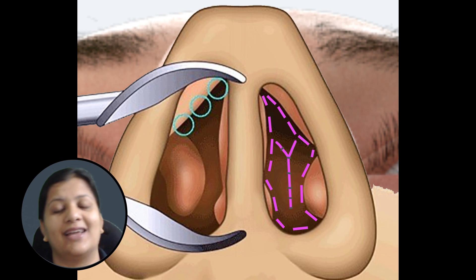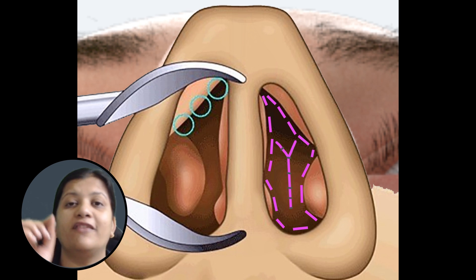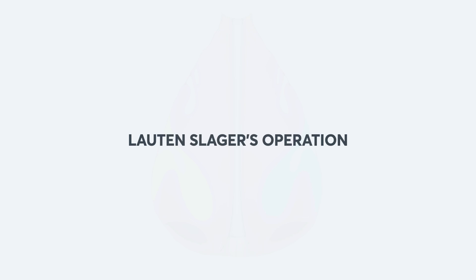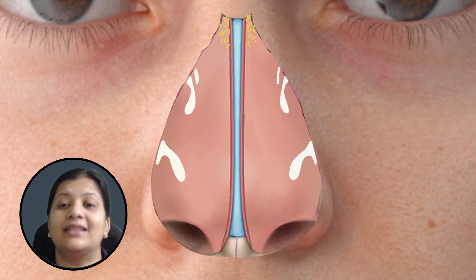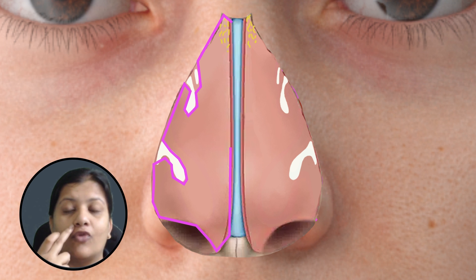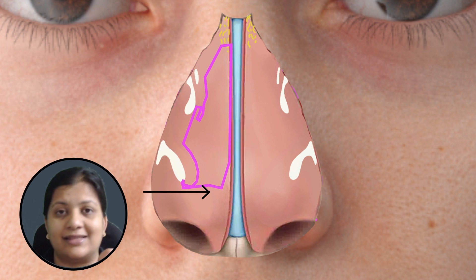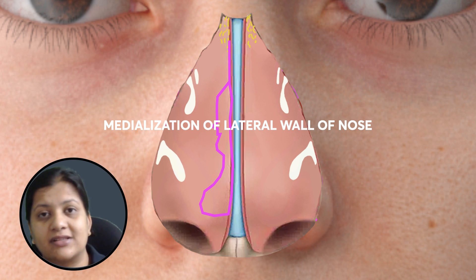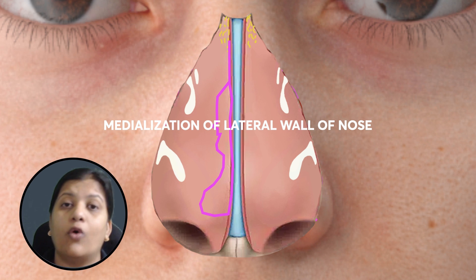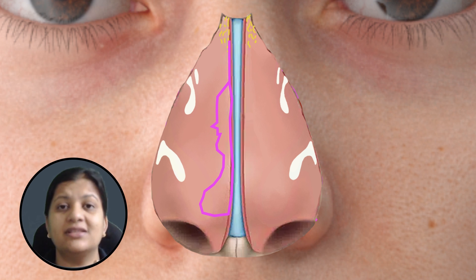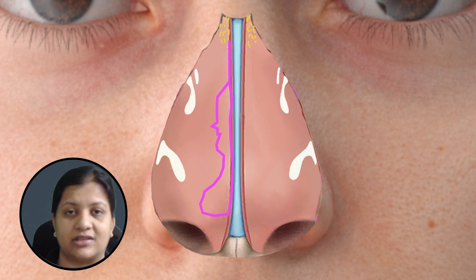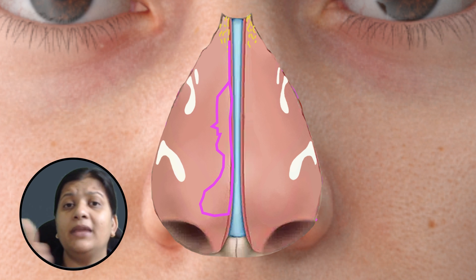Modified Young's operation is a variation where instead of complete closure, you narrow the opening down to 10 millimeters. The next surgery is Lawton Slager's operation, where you fracture the lateral wall of the nose and push it towards the midline, thereby narrowing the nasal cavity. The principle behind Young's, modified Young's, Lawton Slager's, and other surgeries for atrophic rhinitis is the same: narrow the nasal passages to limit airflow, crust formation, and further disease progression.